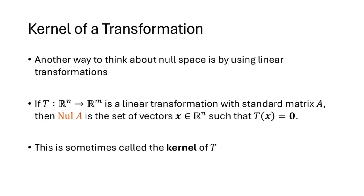Another place that null spaces arise is when we talk about linear transformations. When we have a linear transformation from R^n to R^m with standard matrix A, the null space of A is the set of all vectors x in R^n with the property that T of x equals zero. In this context, the null space is called the kernel of T.